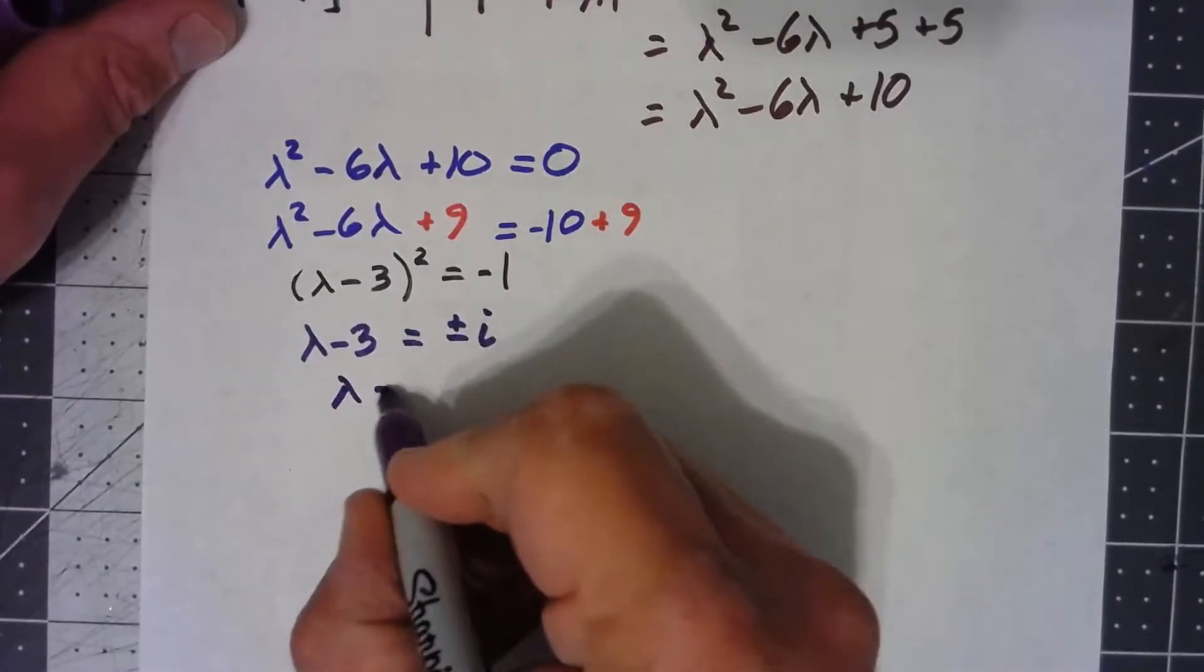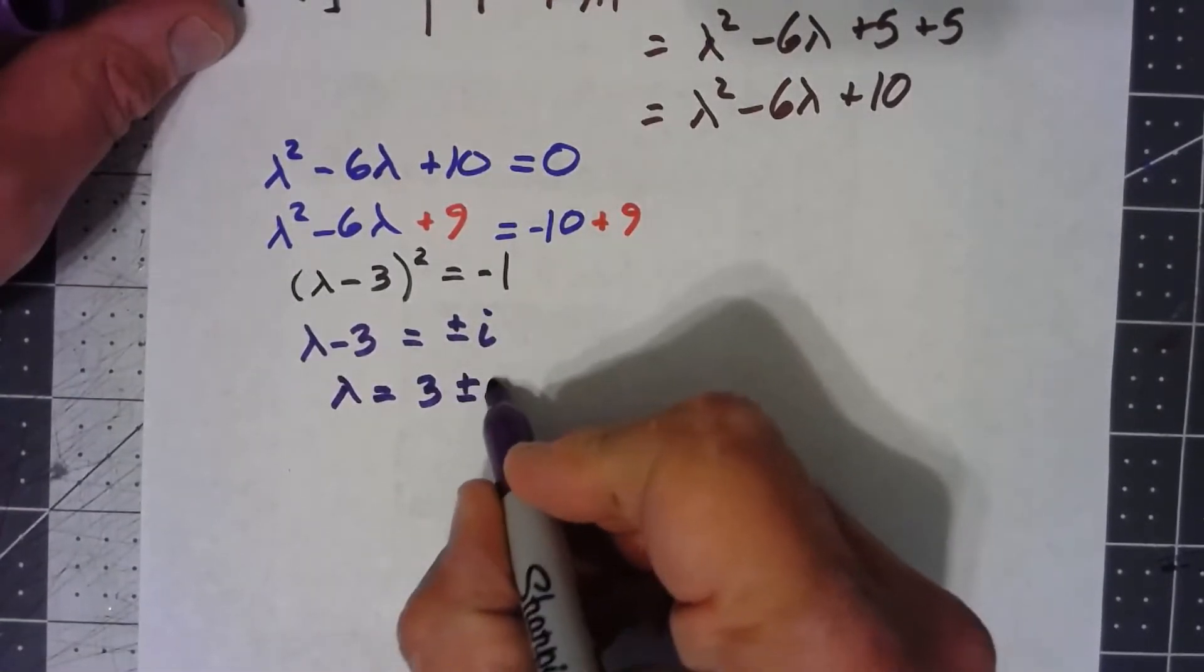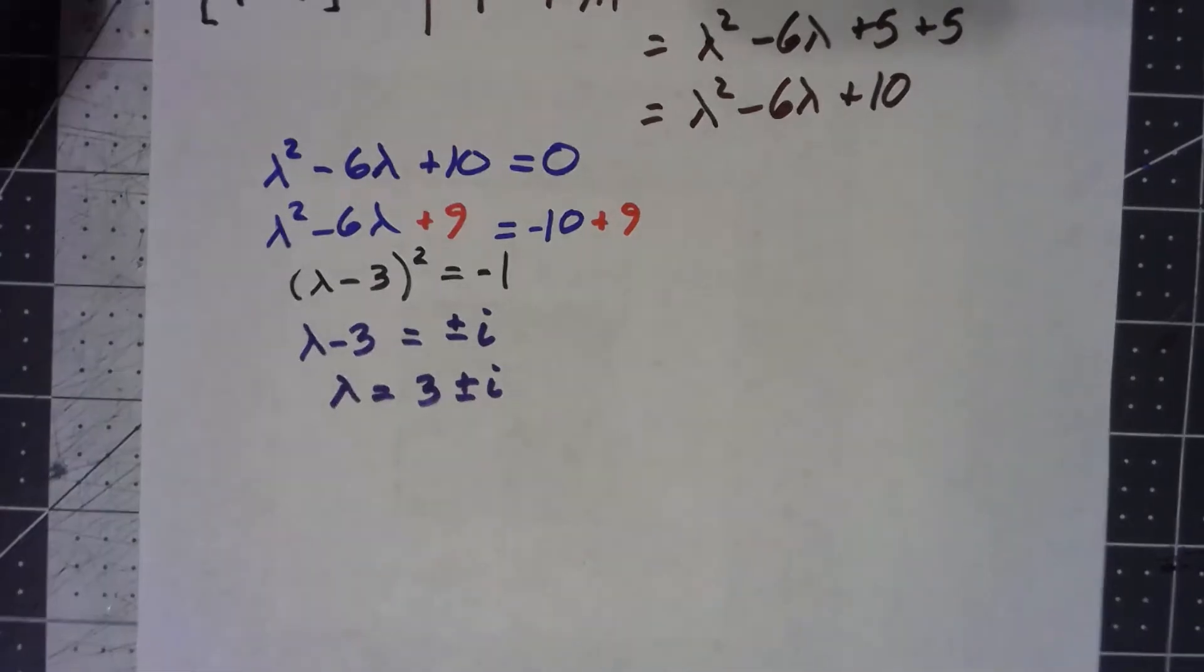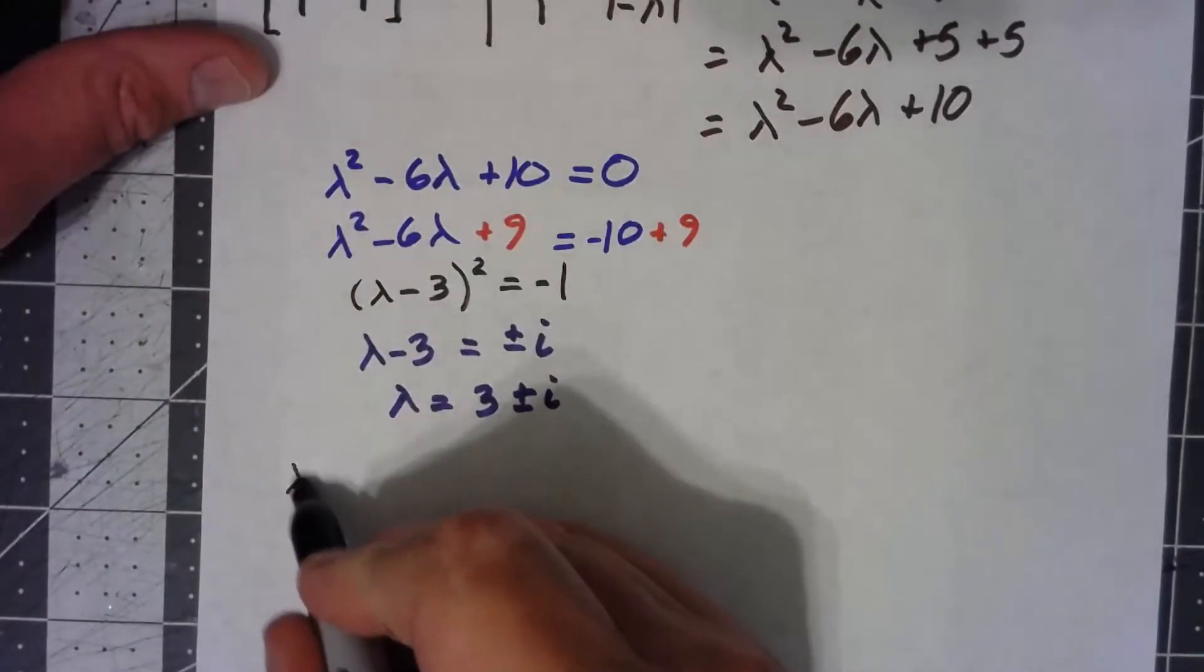And so lambda is 3 plus or minus i. And we've got two complex eigenvalues. Now for each of those eigenvalues, we can find the associated eigenvectors, which are also going to be complex. So let's do that.